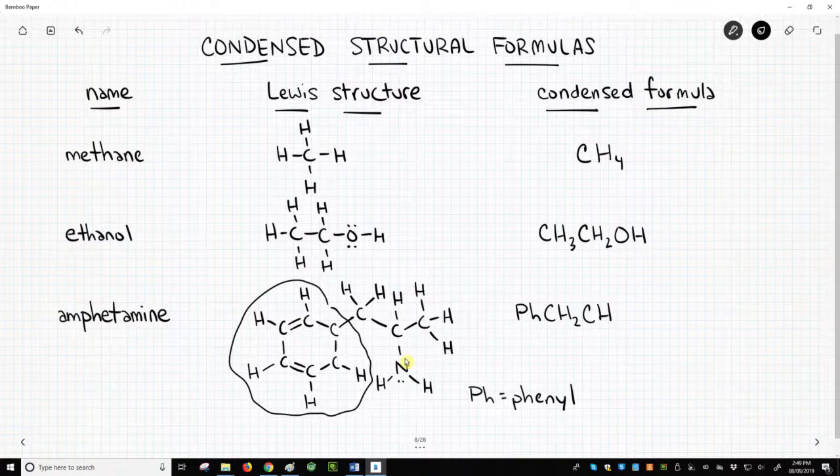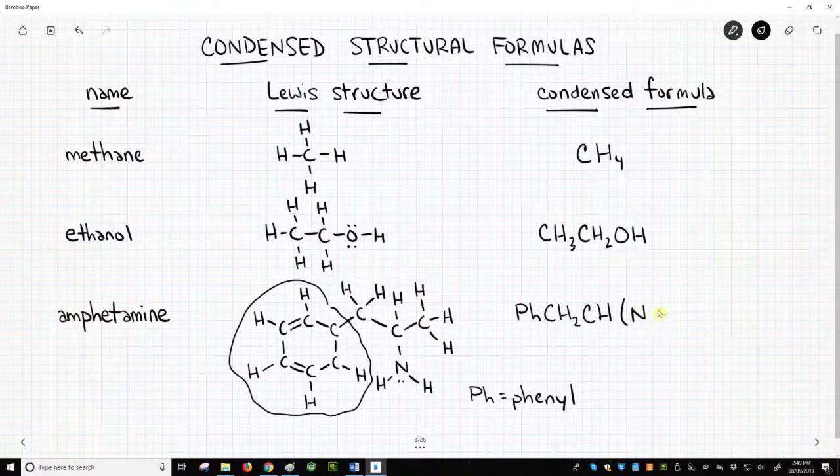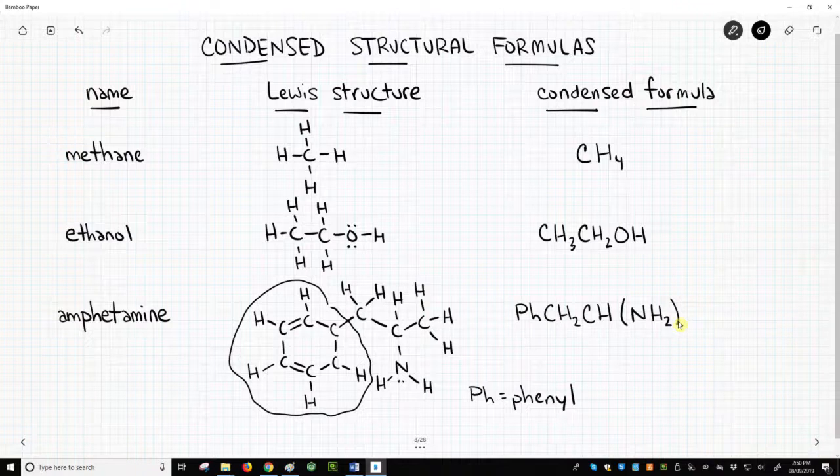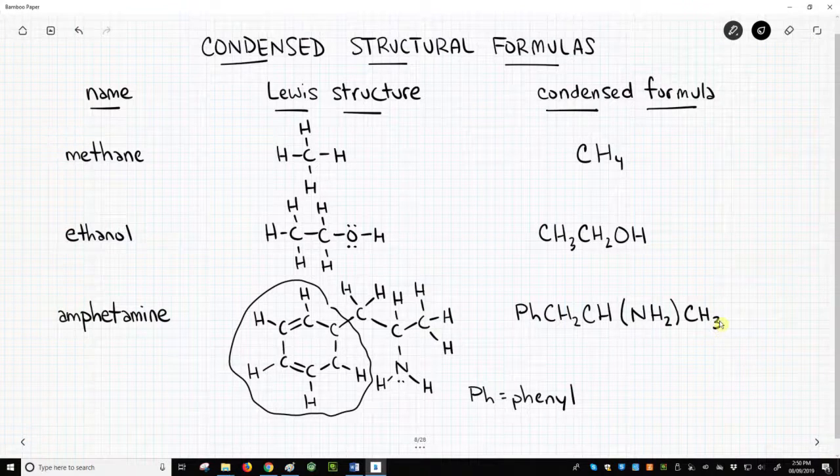I'll pick the nitrogen as the branch. The nitrogen, along with its two attached hydrogens, go inside the parentheses. We'll close the parentheses to end the branch. The end carbon with its three hydrogens finish the structure.